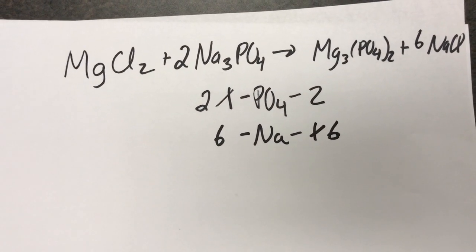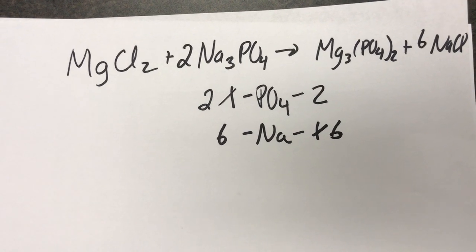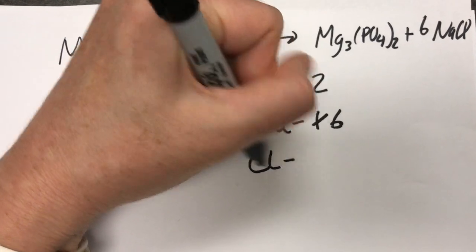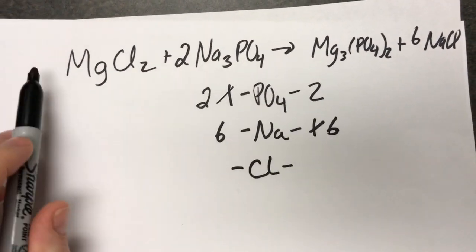So I put a six in front of the sodium chloride. Now we can either move on to chlorine or magnesium. Doesn't matter. Chlorine looks more difficult to me. Magnesium looks pretty straightforward. You got three, you just need to put a three there.